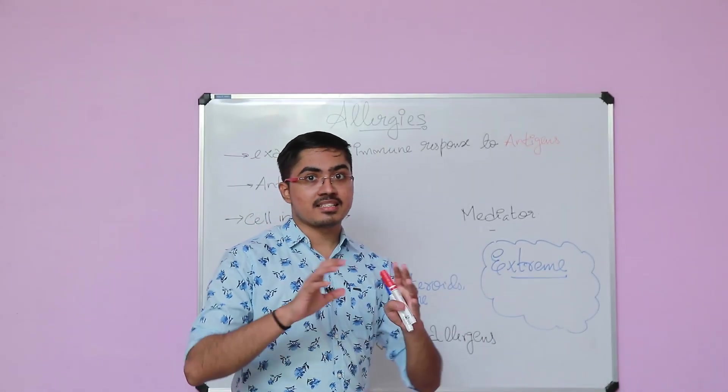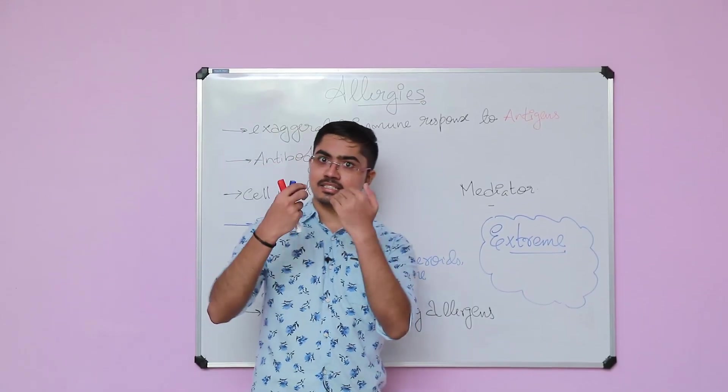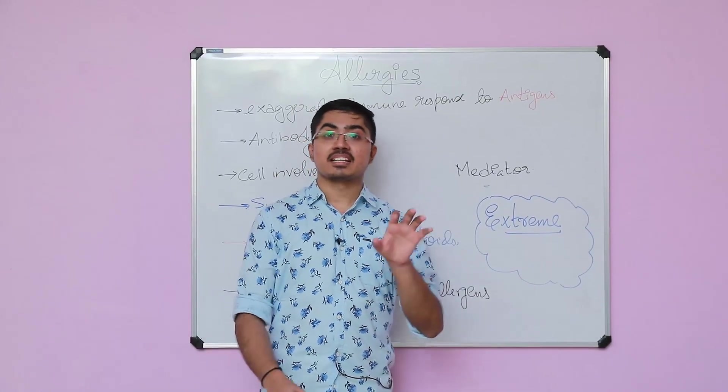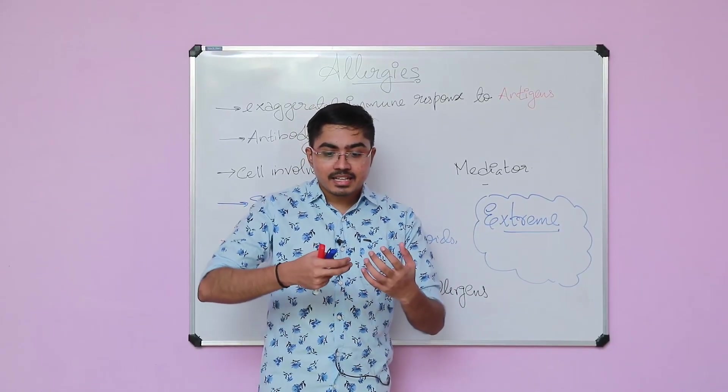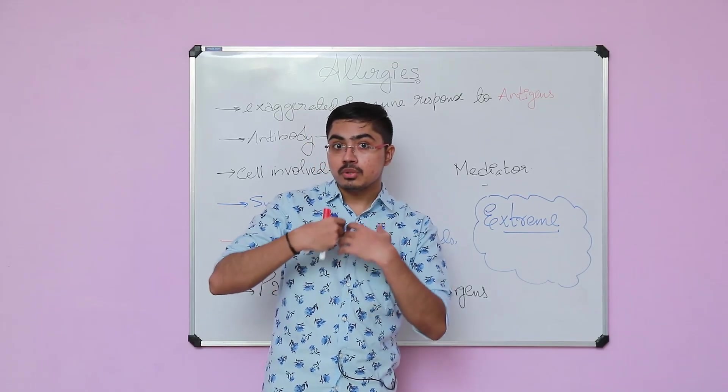The immune system normally has a normal response, but let's say there are certain antigens in the environment. These antigens come and we are exposed to them. In that situation there should be a normal response of the body. But let's say the immune system is going to attack against it with a highly exaggerated response.